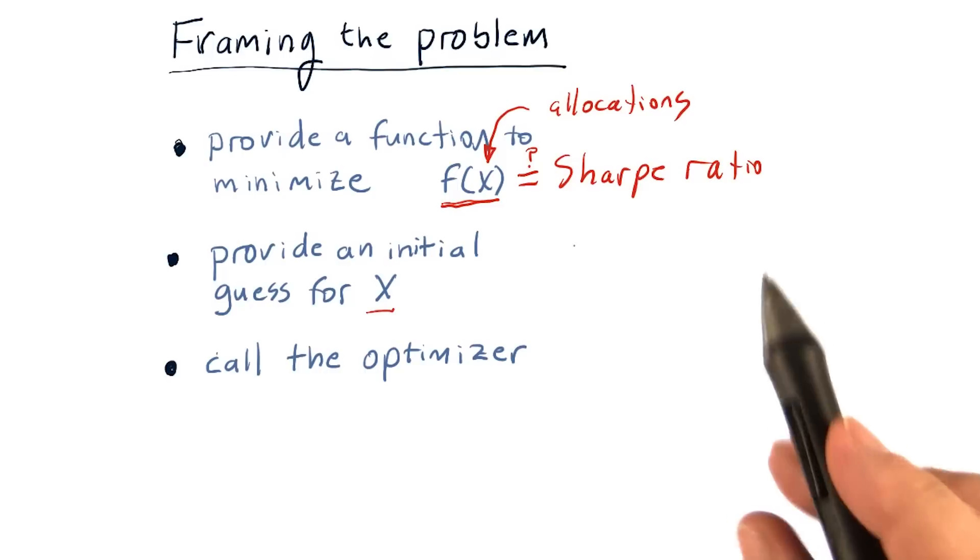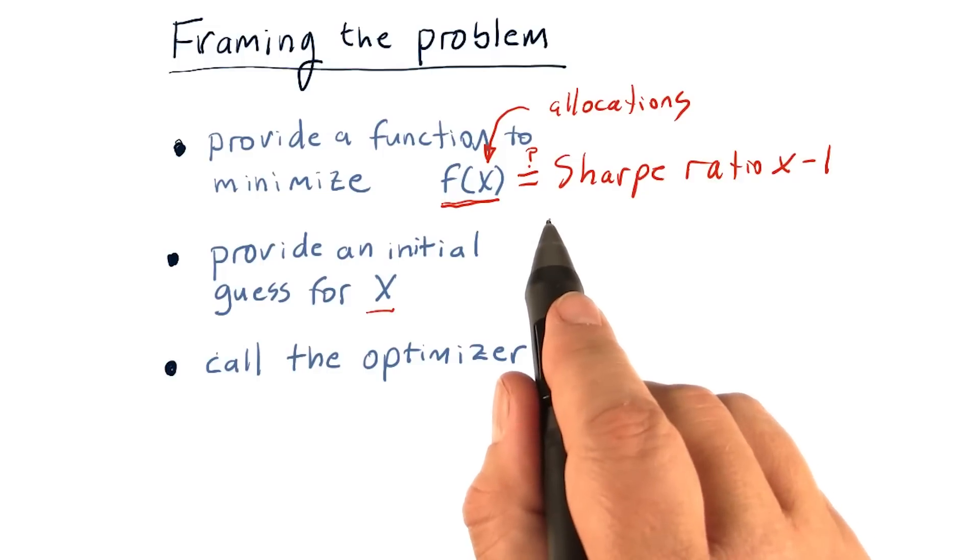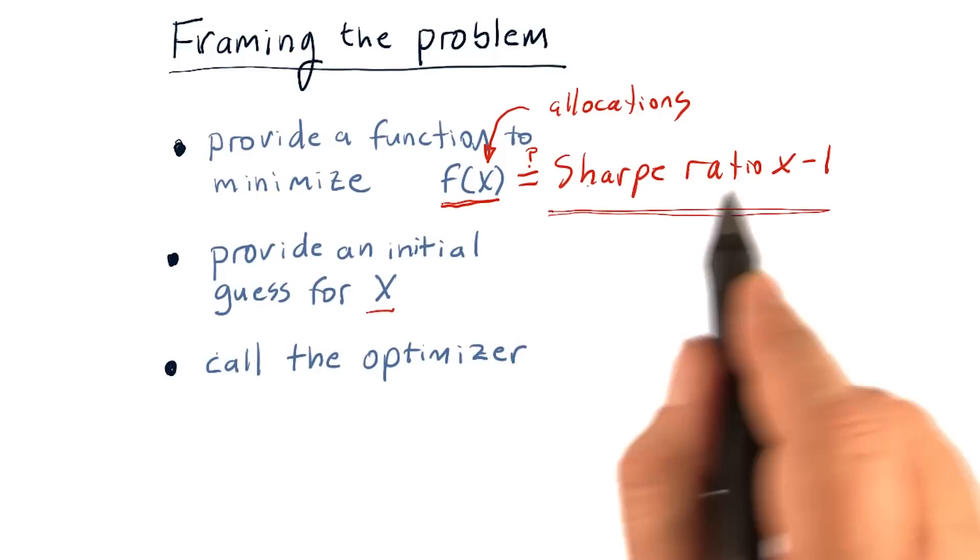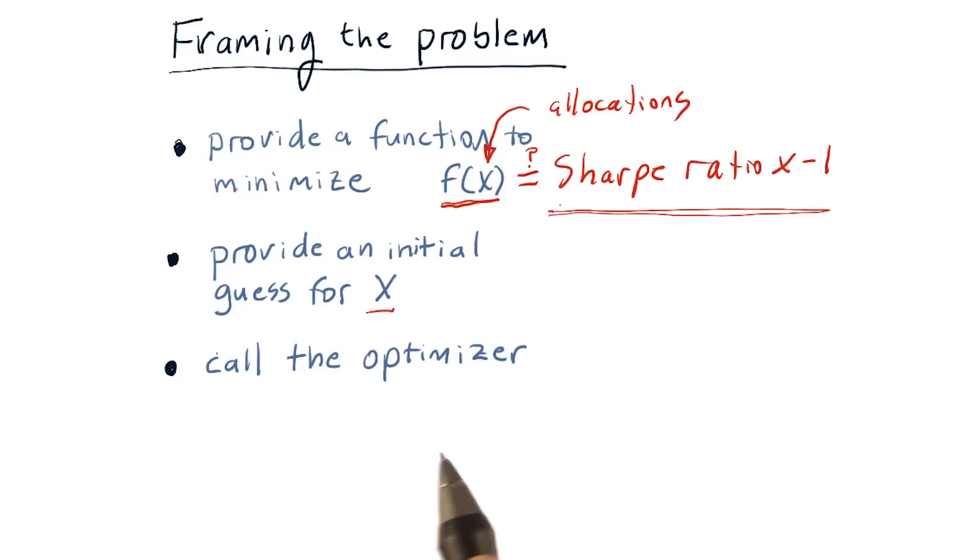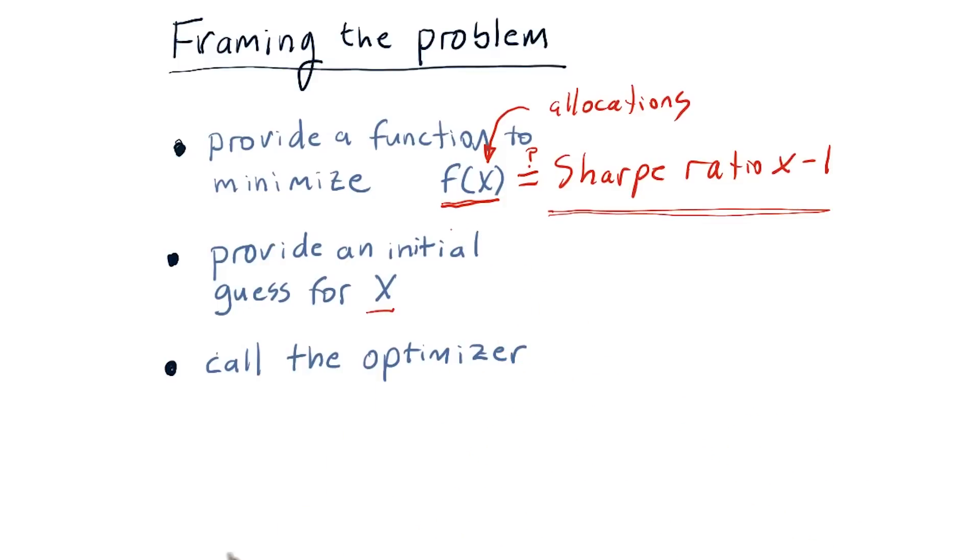That's easy to fix. All we do is multiply this by negative 1. So, all that we want our optimizer to do is optimize for a negative Sharpe ratio. And that'll find the best allocation or the best value for x to solve this problem.